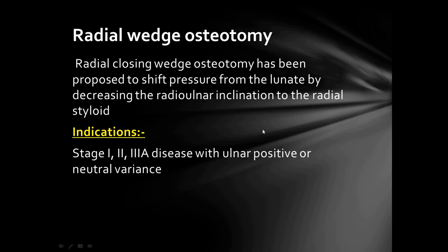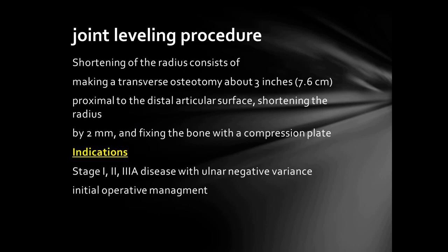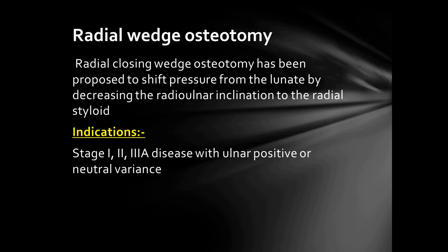Radial wedge osteotomy is different from the joint leveling procedure. A radial closing wedge osteotomy has been proposed to shift pressure from the lunate by decreasing the radial inclination. It is indicated in Stage 1, 2, and 3A disease with ulnar positive or neutral variance.